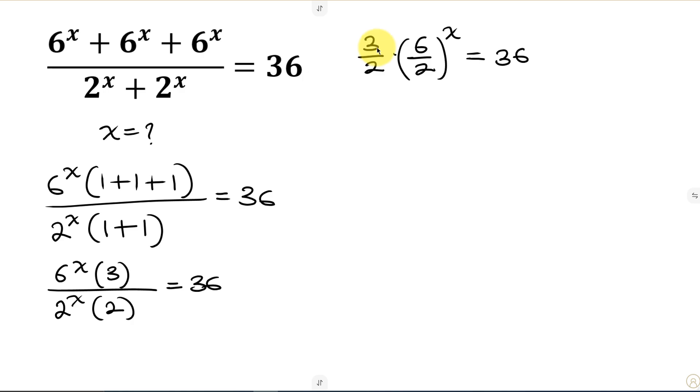Now notice that we can get rid of this 3 over 2 by multiplying both sides by its inverse. The inverse of 3 over 2 is 2 over 3. Now we'll multiply both sides by 2 over 3. So 2 over 3 multiplied by 3 over 2 times. Now 6 divided by 2 is 3. Now to the power of x and this is equal to. Now I'll also use this which is 2 over 3 multiplied by 36. Now see that this 2 cancels out this 2. 3 cancels out 3. Now we are left with 3 to the power of x to be equal to.